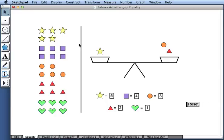To move all the shapes back to the left, I press reset and now I can explore other ways to drag shapes onto both sides of the balance so that both sides are equal.